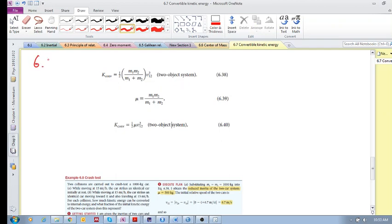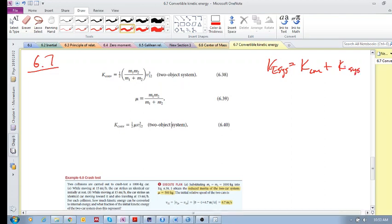Okay, carrying on with 6.7 convertible kinetic energy. In the previous video, we saw that the system kinetic energy in the earth reference frame equals the center of mass kinetic energy plus the kinetic energy of the system in the zero momentum reference frame, which is simply the center of mass kinetic energy which is non-convertible.